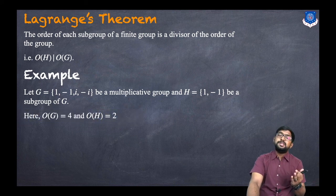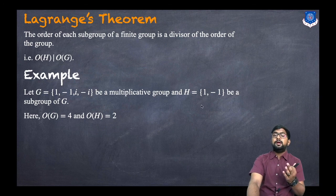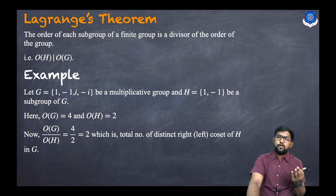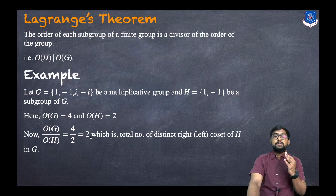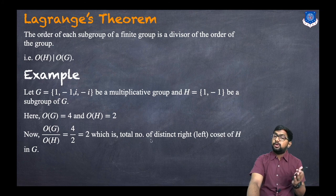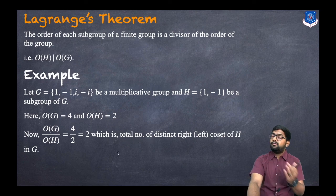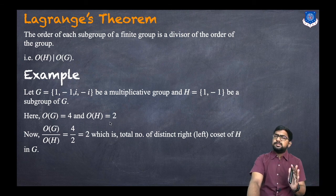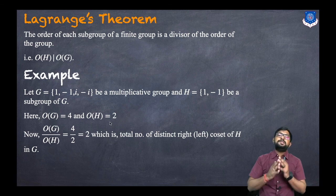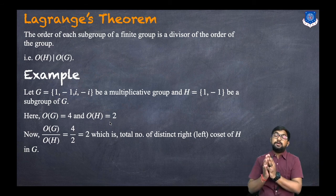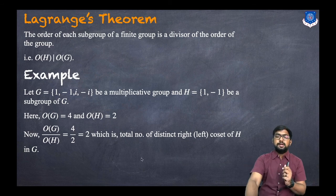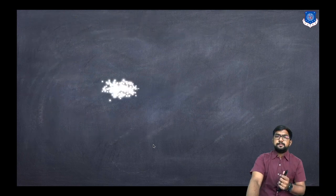Here, order of G = 4 and order of H = 2. So order of G divided by order of H is 4/2 = 2. This confirms that order of H divides order of G, which equals the total number of distinct left or right cosets of H in G. This is a simple statement: the order of each subgroup of a finite group divides the order of the group. This is Lagrange's theorem. Thank you.